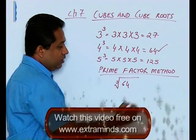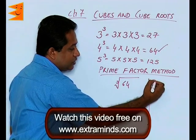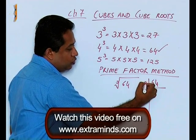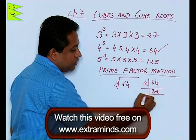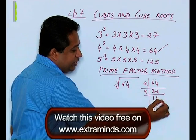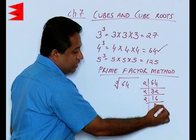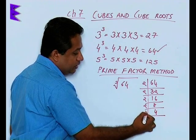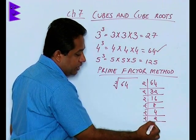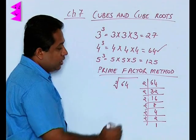Cube root of 64, we will find out the factors of 64. 2 goes 32 times, 2 goes 16 times, 2 goes 8 times, 2 goes 4 times in 8, 2 2s are 4, and finally 2 1s are 2.